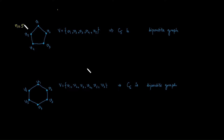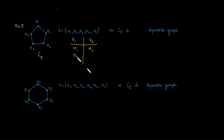For n equals 5, C5 is a cycle with five vertices. Let's try to break this vertex set into disjoint sets V1 and V2. V1 is connected with V2, so they are in different sets. V2 is connected with V3, so different sets. V3 connects to V4, placing V4 in the V2 set. V4 connects to V5, placing V5 in the V1 set. But V5 is also connected with V1, and they are in the same set — so C5 is not a bipartite graph.